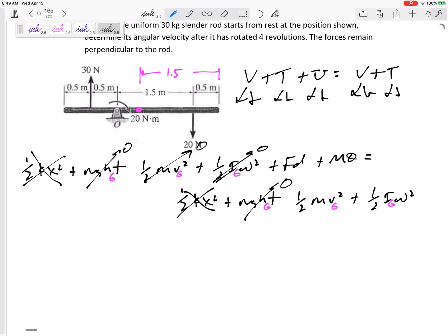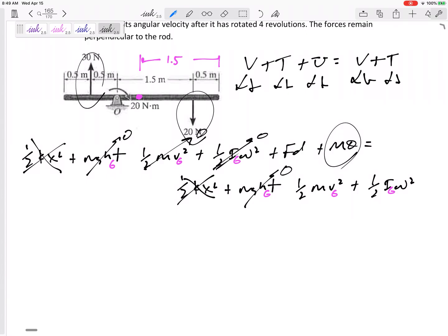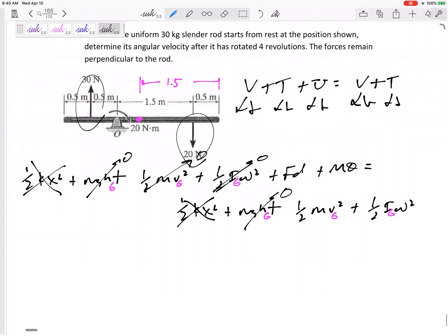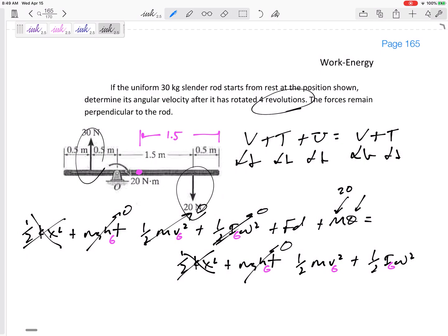The only thing we have on the left hand side are F D and m theta. These forces that are drawn on here act a certain distance. We have this m theta, this m is a constant 20, this theta has to be in radians. They can tell us in revolutions but we need to change that to radians. For four revolutions, I want to change revolution to radians: 2 pi, so 8 pi is the theta.